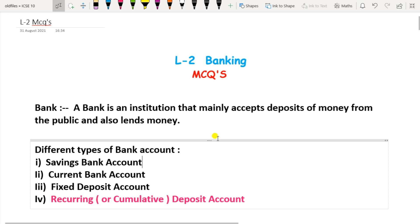Now, there are different types of bank accounts: first one is the savings bank account, then current bank account, fixed deposit account, and the fourth one is the recurring deposit account. In your syllabus, you are going to study the fourth one, that is the recurring deposit account.